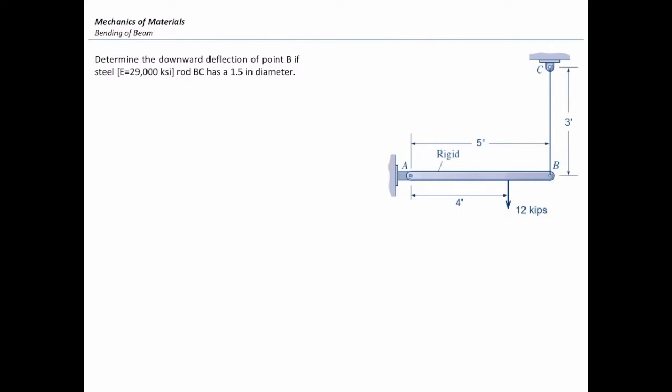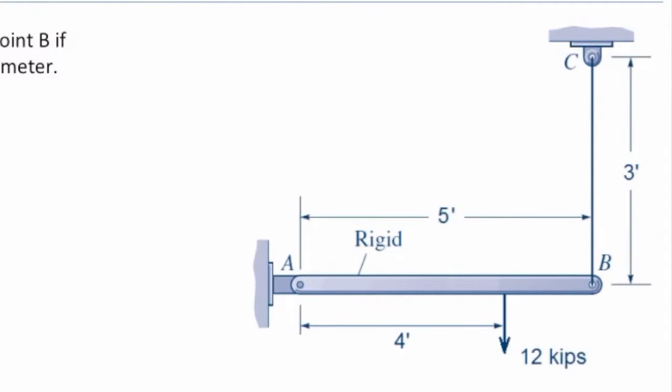In this problem, we need to determine the downward deflection of point B if the rod BC is made of steel. The modulus of elasticity of this steel is 29,000 KSI and has a diameter of 1.5 inch.